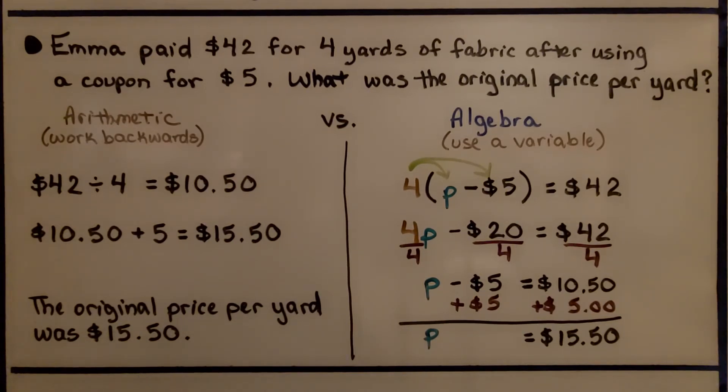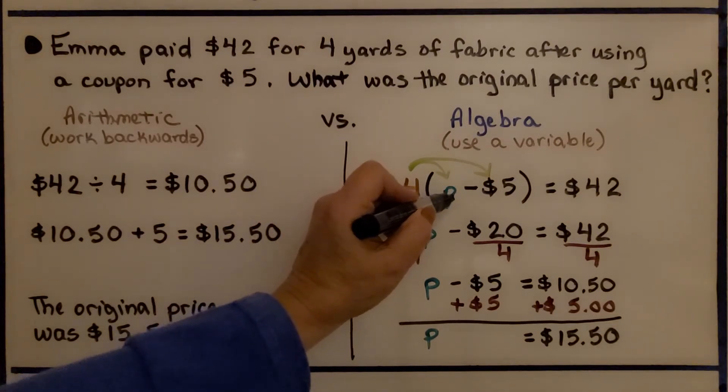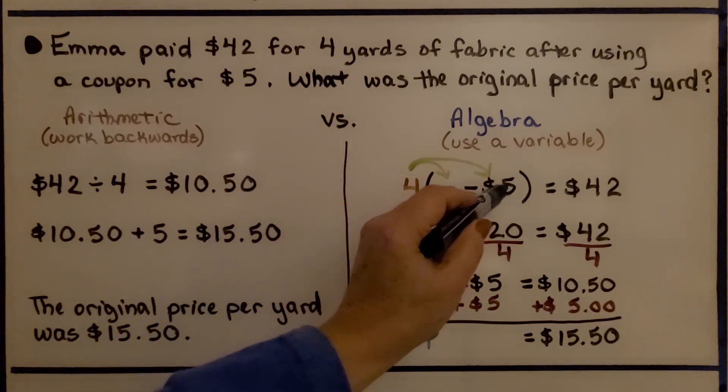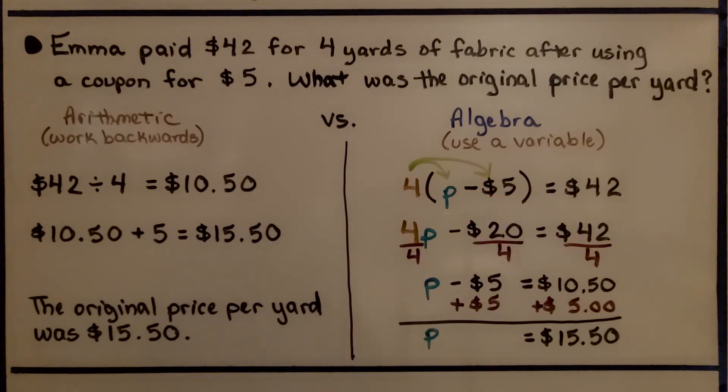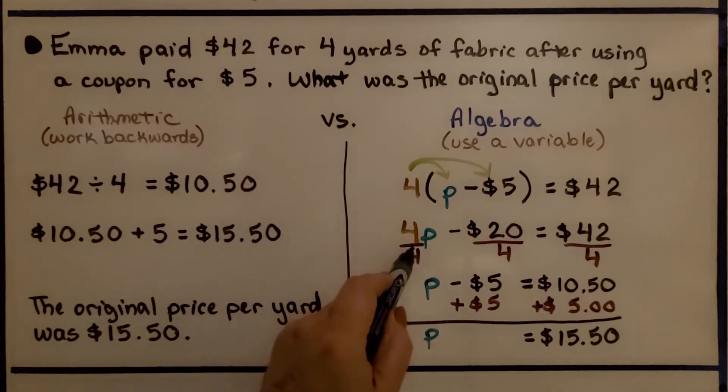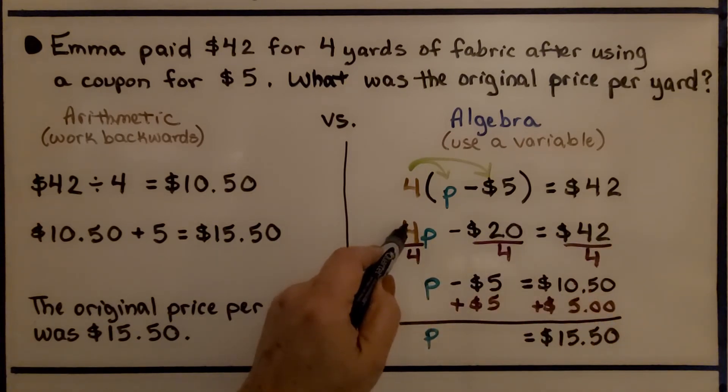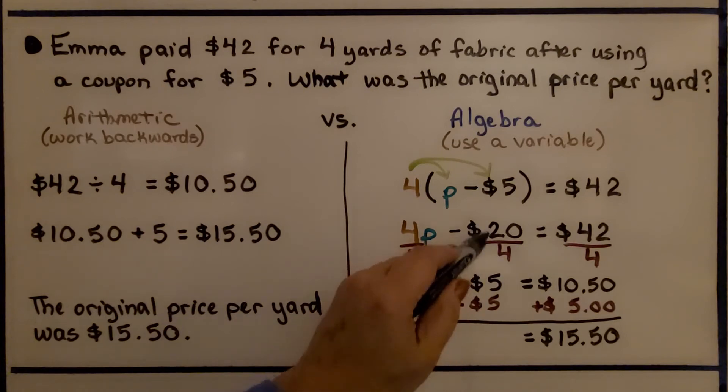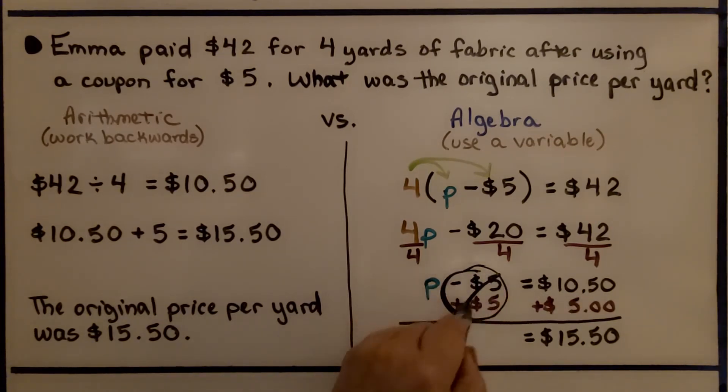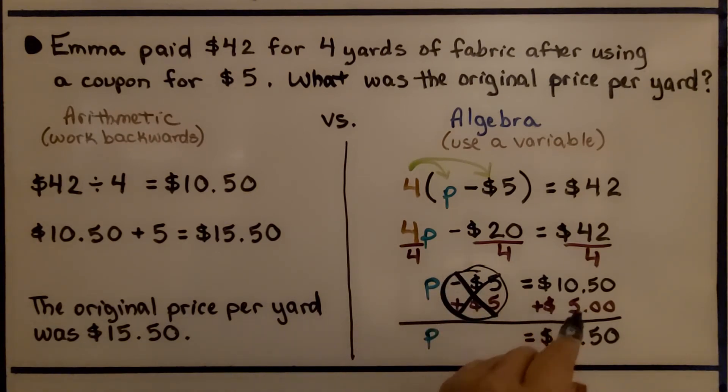Using algebra, we're going to use a variable. So P is going to be the original price of the yards of fabric. We have 4 times P and 4 times negative $5 is equal to $42. That means we have 4P minus $20 is equal to $42. We divide each term by this 4 coefficient, and we get 1P minus $5 is equal to $10.50. Now, we add the $5 back onto each side. We create a zero pair here, and we add $5 on this side. We get P is equal to $15.50. We know that was the price per yard for the original yard of fabric.